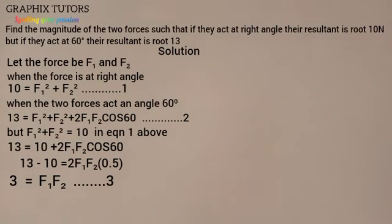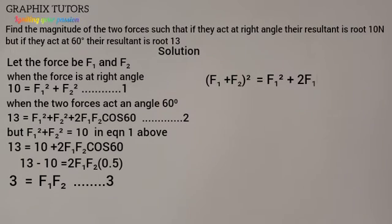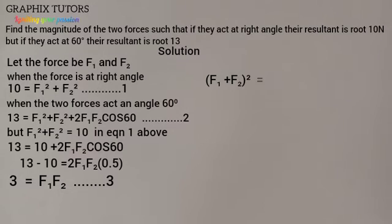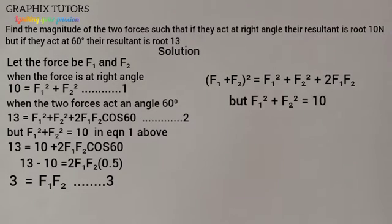Now, recall that F1² + F2² appears in the expansion of (F1 + F2)². If we expand (F1 + F2)² we get F1² + 2·F1·F2 + F2². So F1² + F2² = (F1 + F2)² − 2·F1·F2. But F1² + F2² equals 10 from Equation 1, so substituting: (F1 + F2)² = 10 + 2·F1·F2.